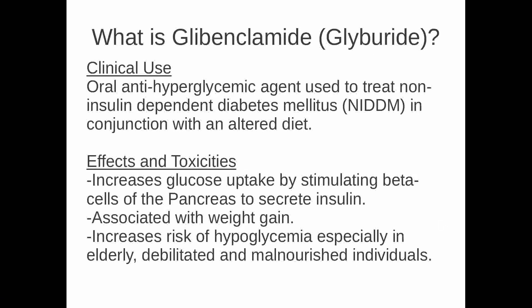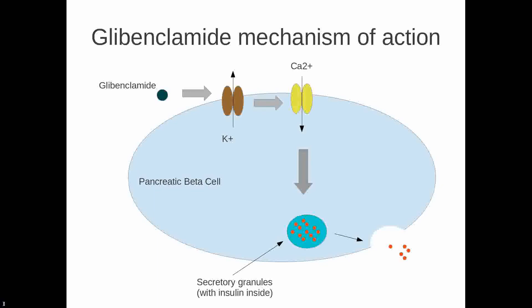Glibenclamide, also known as glyburide, is an oral anti-hyperglycemic agent used to treat non-insulin-dependent diabetes mellitus, and it's used in conjunction with an altered diet. It affects the body by increasing glucose uptake by stimulating beta cells of the pancreas to secrete insulin. It's associated with weight gain and also associated with increased risk of hypoglycemia, especially in the elderly, debilitated, and malnourished.